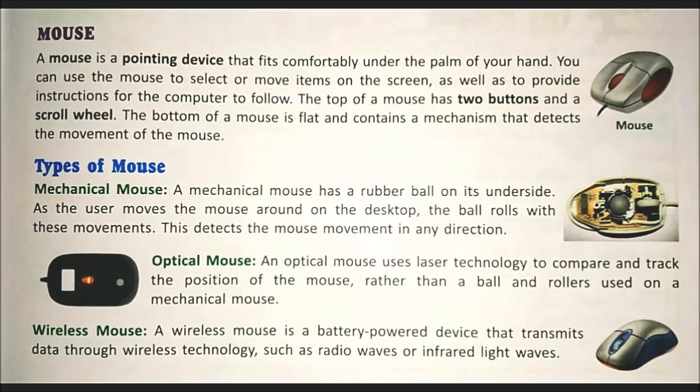Types of mouse: there are five types of mouse — mechanical mouse, optical mouse, wireless mouse, air mouse, and touch mouse. Mechanical mouse: a mechanical mouse has a rubber ball on its underside. As the user moves the mouse around on the desktop, the ball rolls with these movements. This detects the mouse movement in any direction. Optical mouse: an optical mouse uses laser technology to compare and track the position of the mouse, rather than a ball and rollers used on a mechanical mouse.